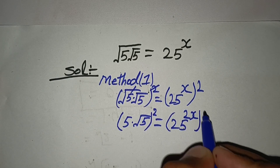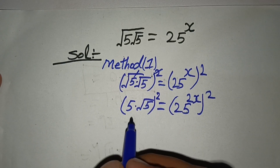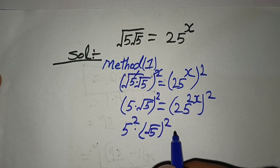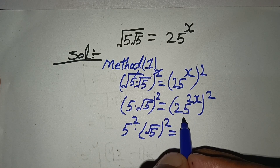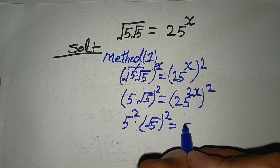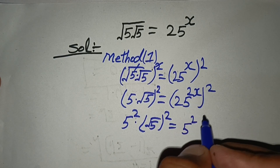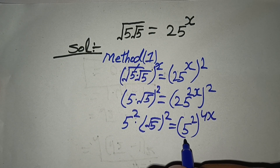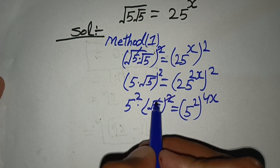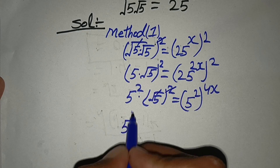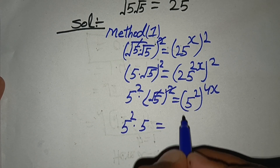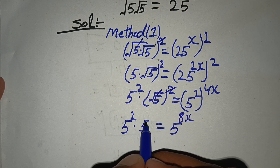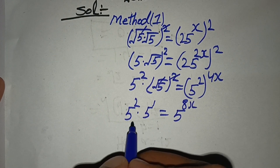Again we take square on both sides. So here 5 power 2 times square root of 5, power 2, equal to — we can write 25 in the form of 5 squared, and 2x times 4x. Whenever you have power to power, multiply their powers. This two gets cancelled with this square root, meaning 5 power 2 times 5 equal to 5 power 8x.